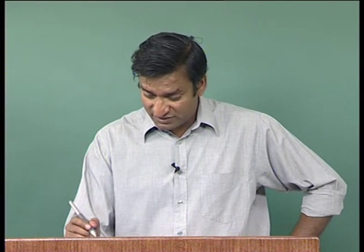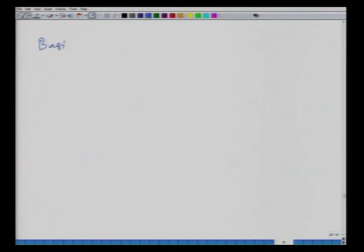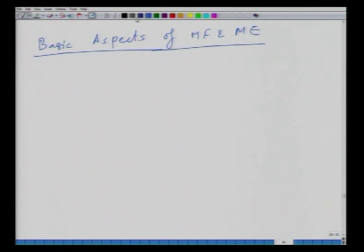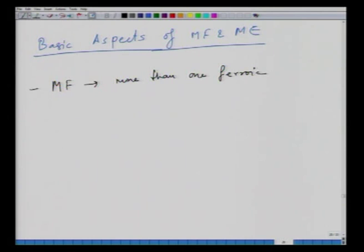We will discuss the basic aspects of multiferroic and magnetoelectric systems, starting with general features. The true definition of a multiferroic material is that it must have more than one ferroic ordering in a single phase.